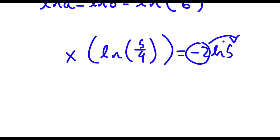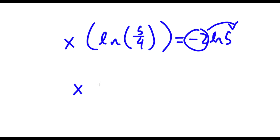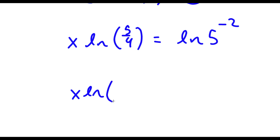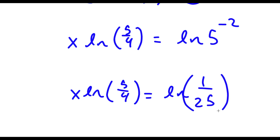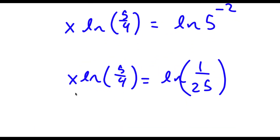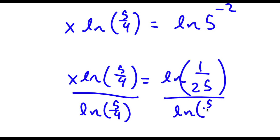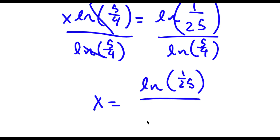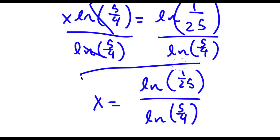Now I can move the negative 2 to the front of the 5, so I have x times ln(5/4) is equal to ln 5 to the power of negative 2. Now 5 to the power of negative 2 is the same thing as 1 over 25, so this equals ln(1/25). Now if I divide both sides by ln(5/4), these two cancel out and I'm left with x is equal to ln(1/25) over ln(5/4). So this is my answer.